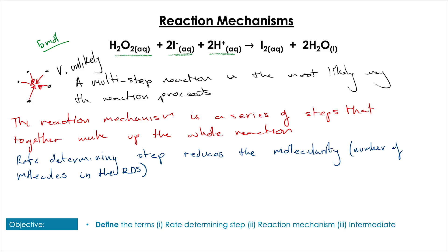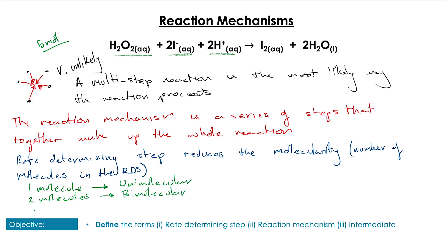The rate determining step functions to reduce the molecularity of the overall reaction — molecularity meaning the number of molecules required to collide to allow the reaction to occur. If only one molecule is required, that's a unimolecular process. If two molecules are involved, that's a bimolecular process. And if three molecules are involved — which is much less common — that is a termolecular process.